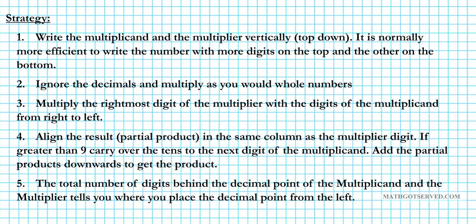Step two, you ignore the decimals when you're multiplying, and you just multiply the multiplicand and the multiplier as though you're multiplying whole numbers.